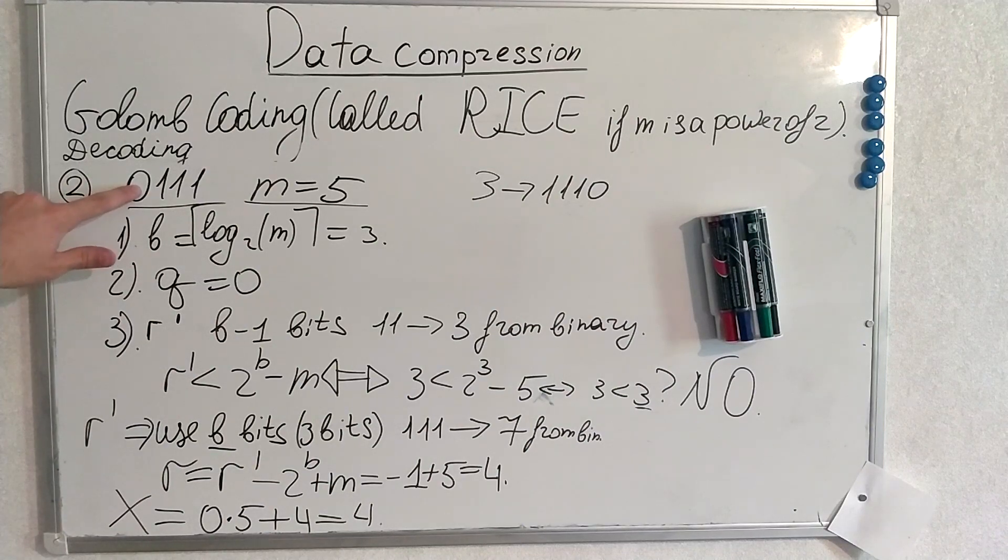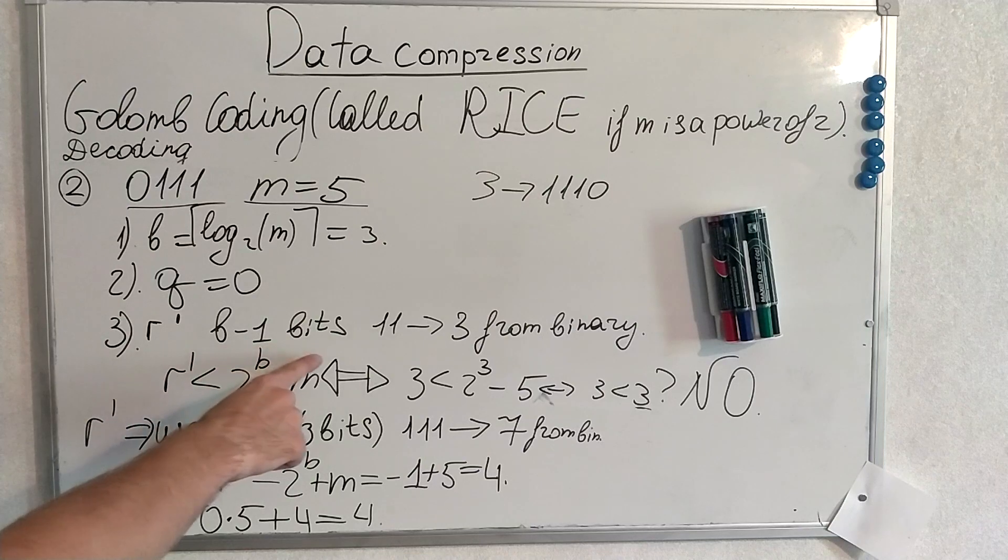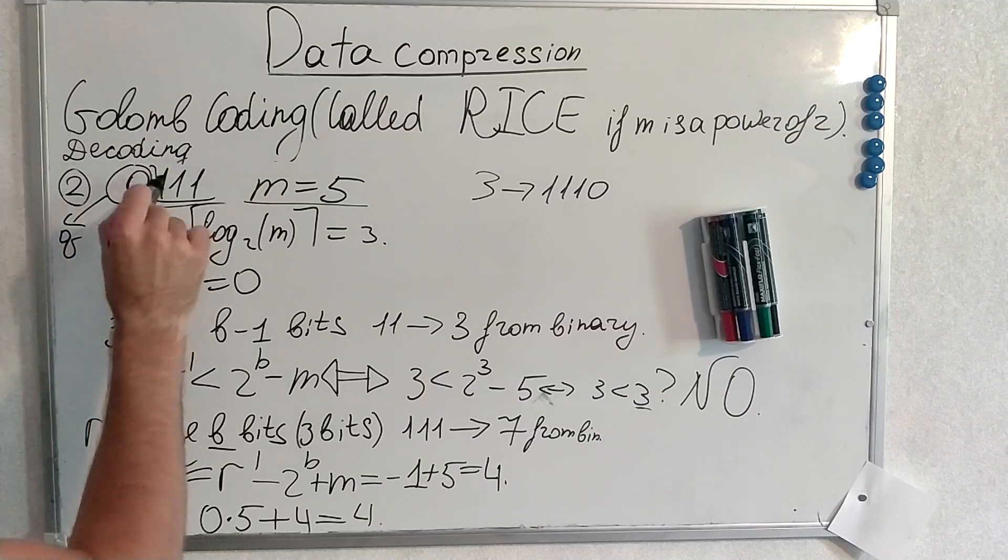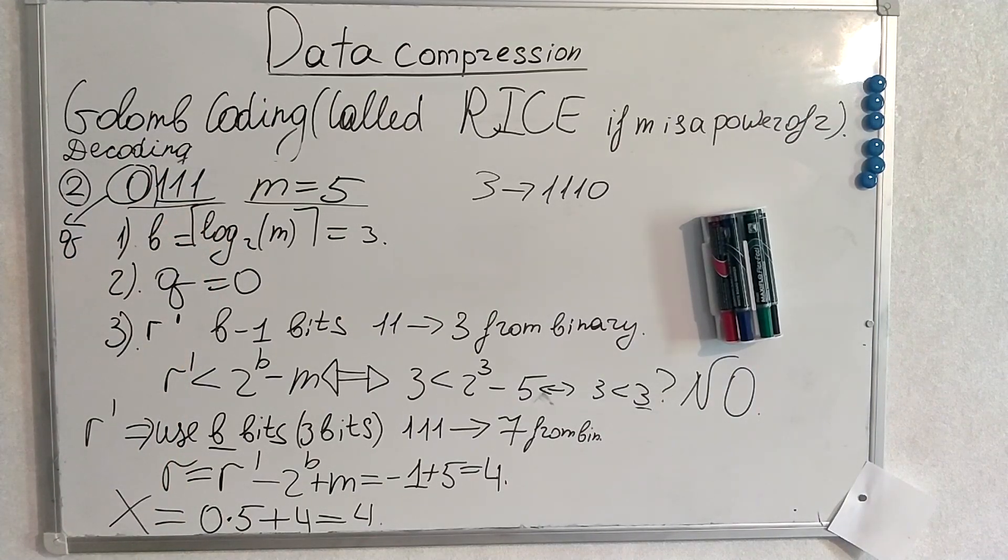So we look here. It is 0. Thus q is 0. And here is the case where our inequality does not hold. So r tilde at the end we use it as b minus 1 bits from this sequence because that refers to q. So this refers to determining r tilde. So the inequality does not hold. I am proving it here. You can try it yourself if you don't believe me. Then r tilde, we know that inequality does not hold. So we use b bits, 3 bits, because b is 3 from here. We use 3 bits: 1, 1, 1 from here.